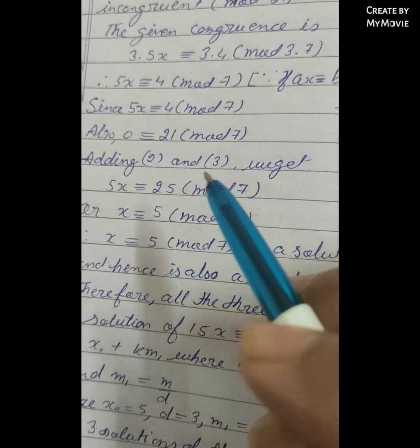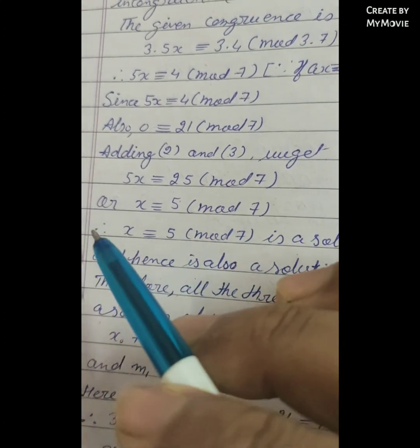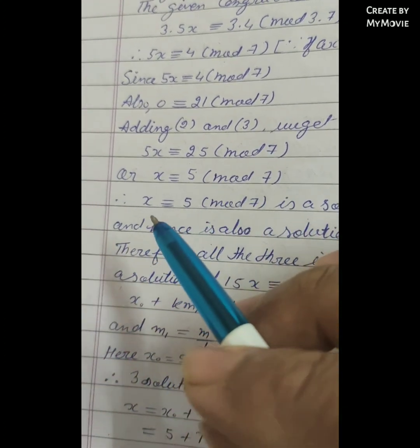So adding equations 2 and 3, we get 5x ≡ 25 (mod 7), or x ≡ 5 (mod 7).